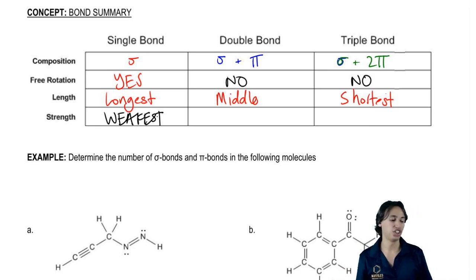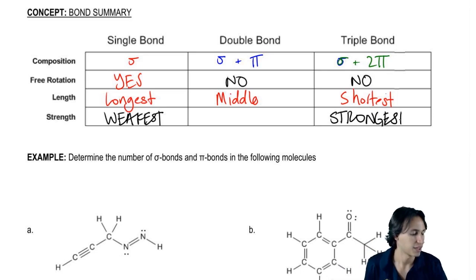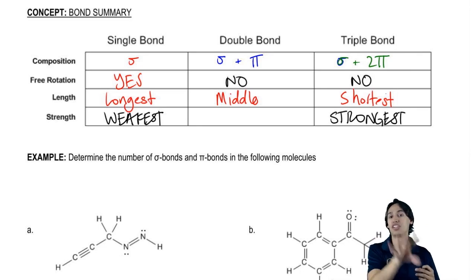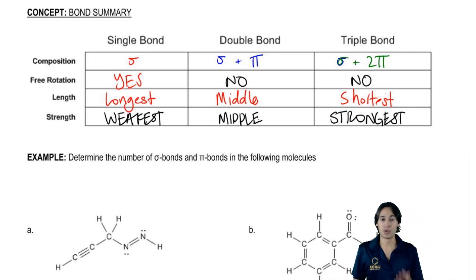Now the triple bond is actually going to be the strongest. The reason for that is it has three orbitals that are overlapping and each one is giving a little bit, is saving a little bit more energy. And that means that once again, my double bond is going to be in the middle.